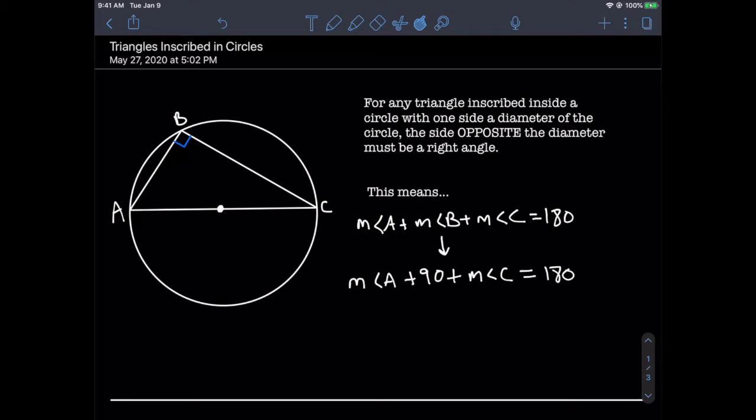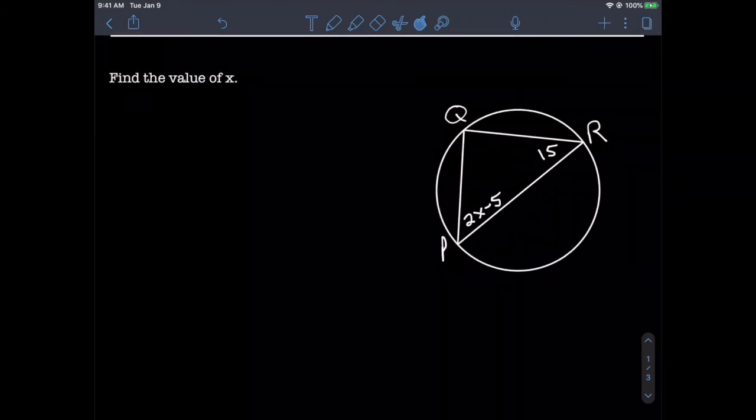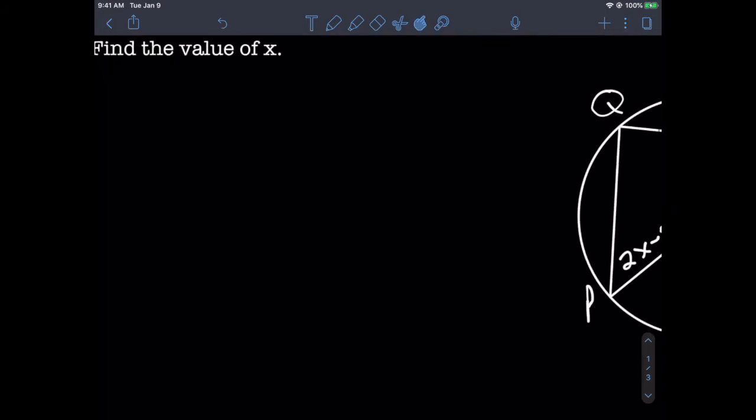Let's see how we can put this information to use. Our first example is going to ask us to solve for a variable. As you can see, we have a triangle inscribed inside a circle where one of the sides is a diameter. That means angle Q here is supposed to be a 90-degree angle. Since we have a triangle, when we add all our angles together we get 180. So we have (2x - 5) + 90 + 15 = 180.